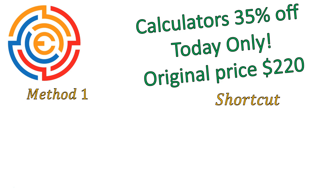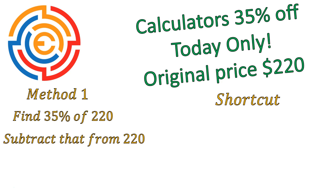First off, I want to look at this question. In this question, we're looking at calculators being 35% off. It's a today-only special price, original price of $220. This is obviously a very nice calculator. In the first method you can see over there, I'm going to show you how most people are taught to do this. Typically, when we're shown a discount price, what we're asked to do is find the 35% of $220, and then subtract that from $220, and that will give you your new amount. So you find the amount you're saving, and then subtract that from the original price.